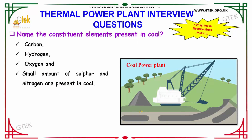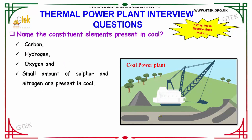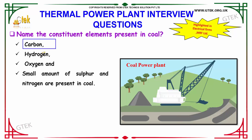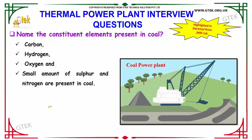Name the constituent elements present in coal. The constituent elements present in coal are carbon, hydrogen, oxygen, and also some amount of sulfur and nitrogen.